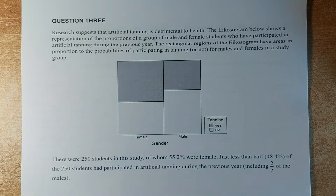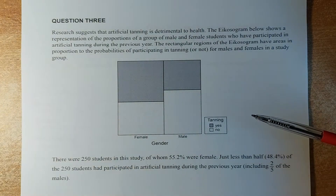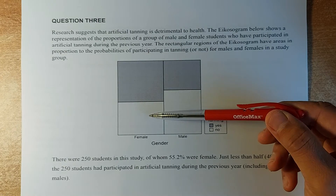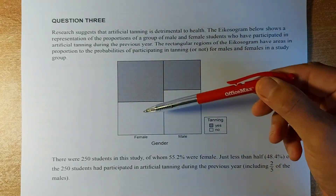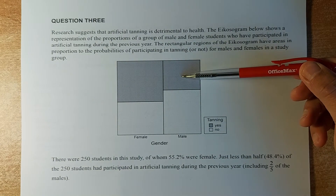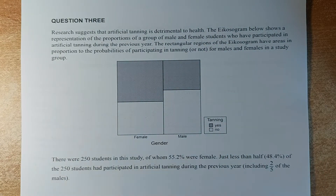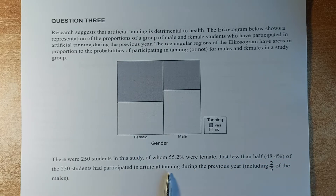Let's read the question. Research has shown that artificial tanning is detrimental to health. The diagram shows a representation of the proportion of a group of male and female students who have participated in the artificial tanning program during the previous year. There are 250 students in the study, of whom 55.2% were female. Just less than half of the students had participated in artificial tanning during the previous year, including two fifths of the males.